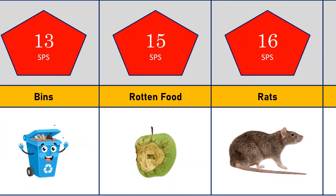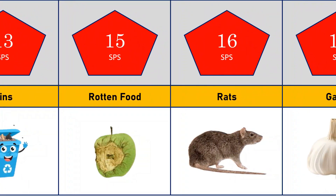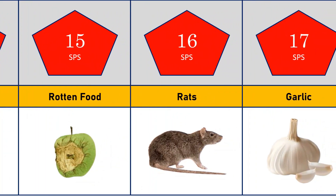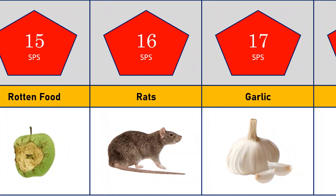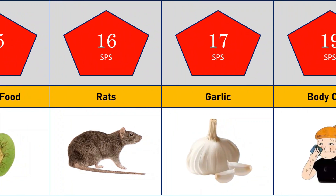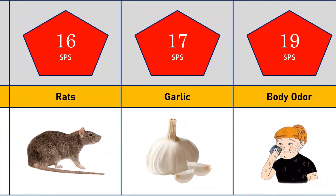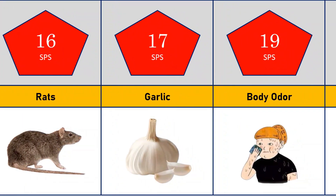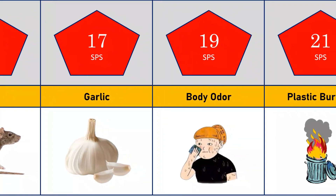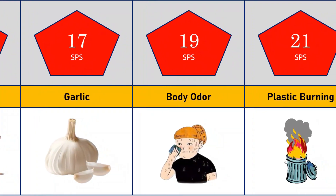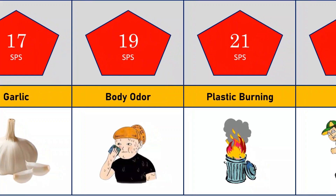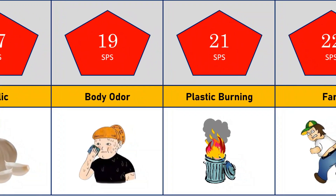Smell of reds: 16 SPS. Smell of garlic: 17 SPS. Smell of body odor: 19 SPS. Smell of plastic burning: 21 SPS.